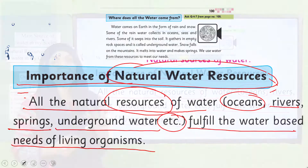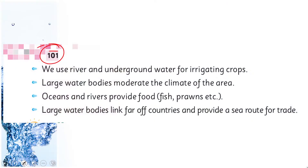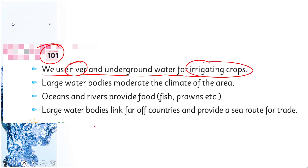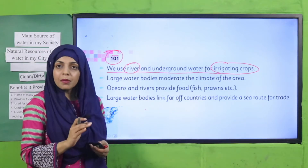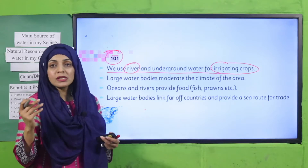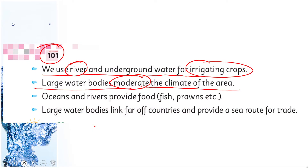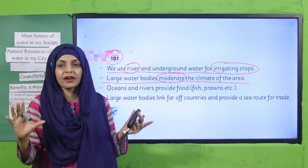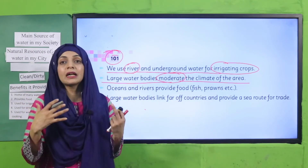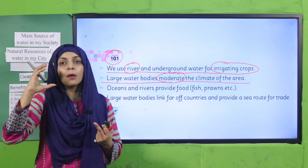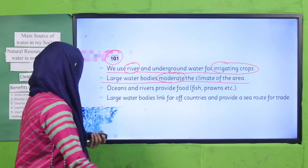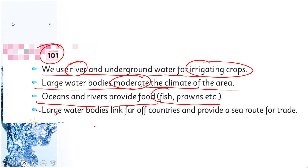Let's quickly see on page number 101. We use river and underground water for irrigating crops. Large water bodies moderate the climate of the area. Oceans and rivers provide food like fish, prawns, etc.